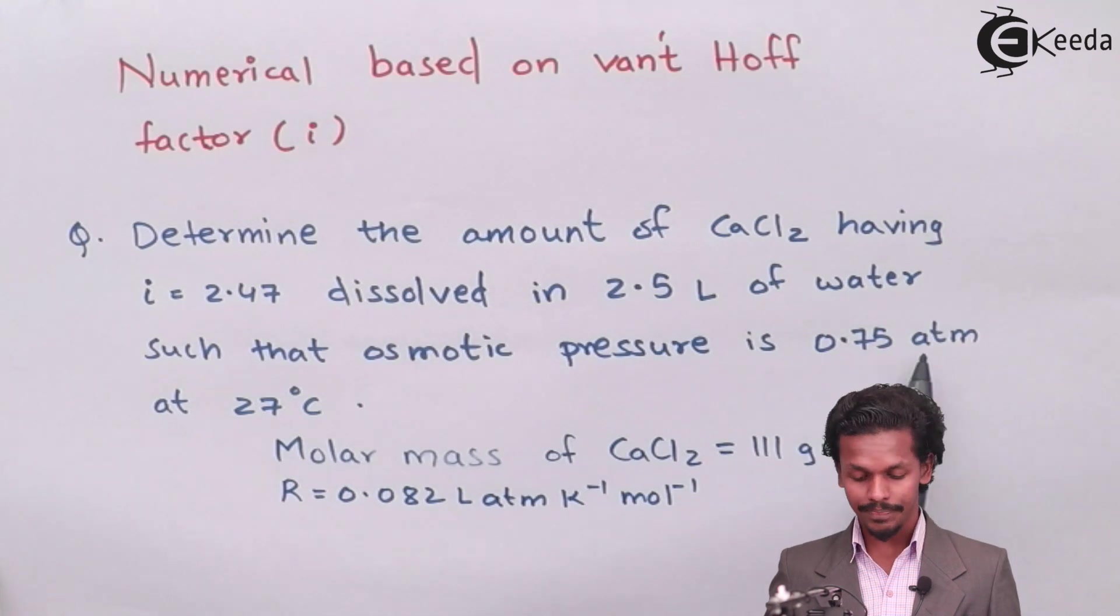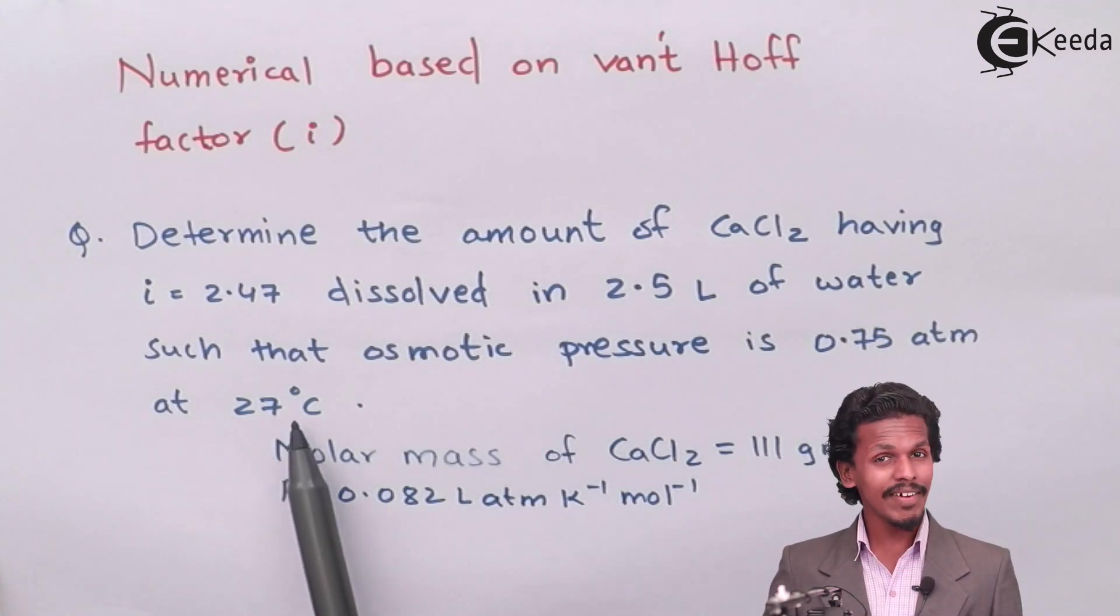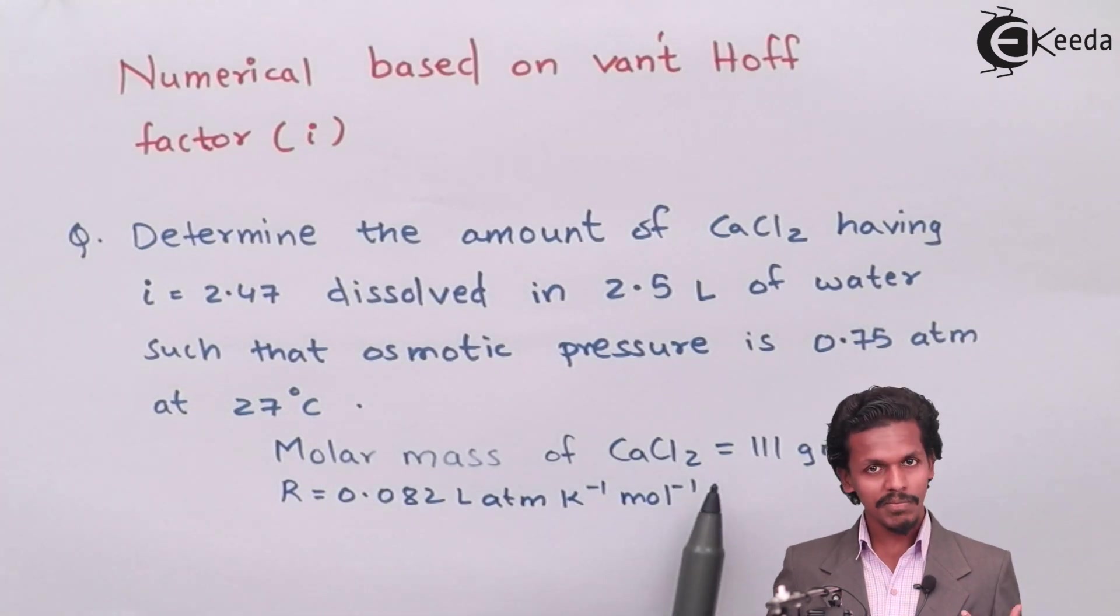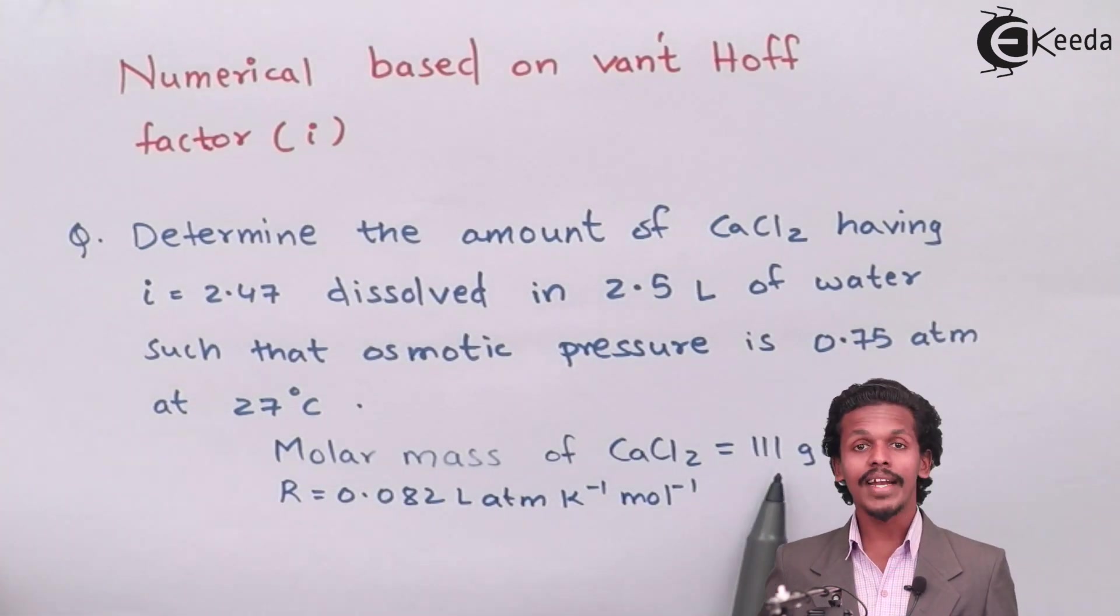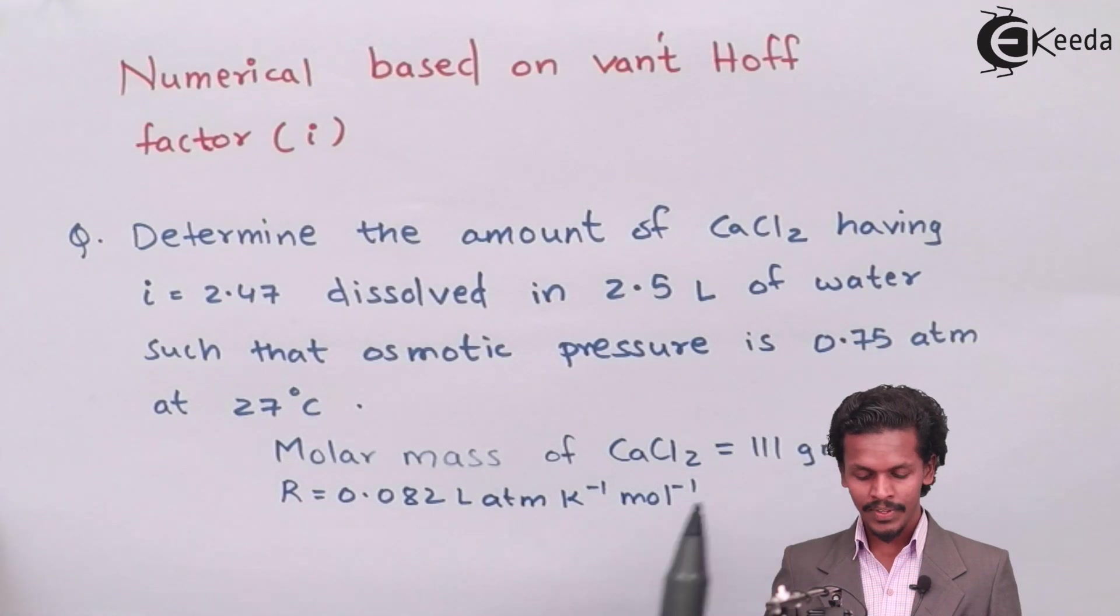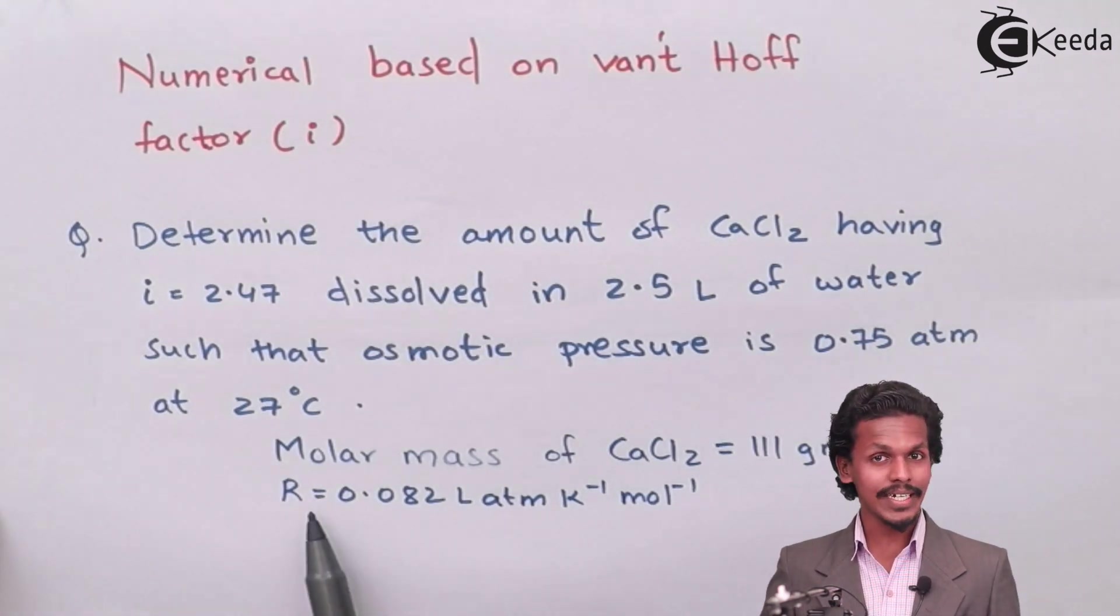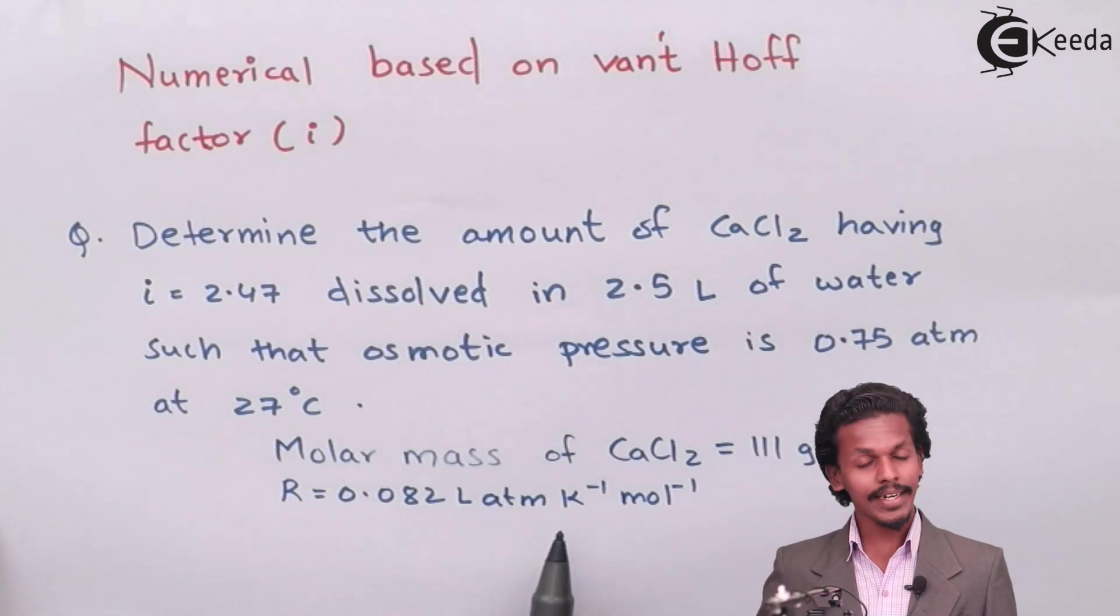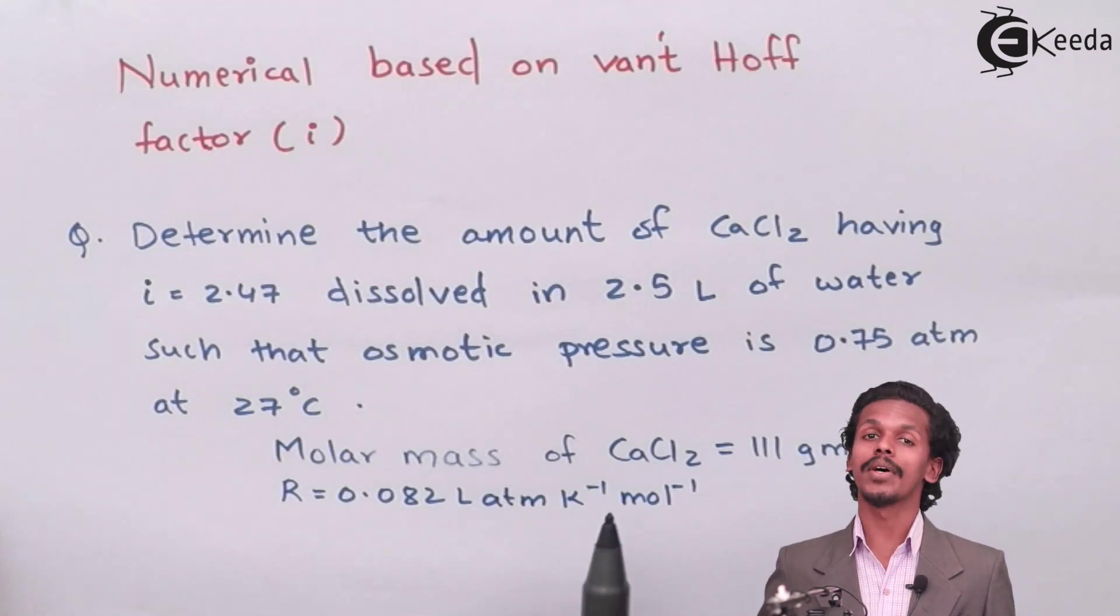at 27 degrees Celsius. The molar mass of CaCl2, that is the solute, is 111 gram per mole and the value of the gas constant given here is 0.082 liter atmosphere per Kelvin per mole.